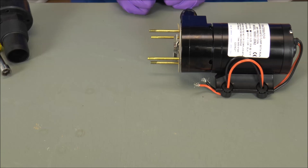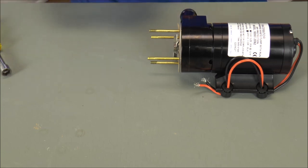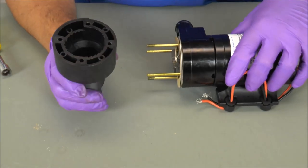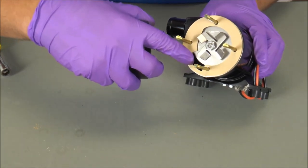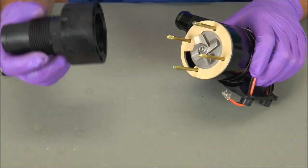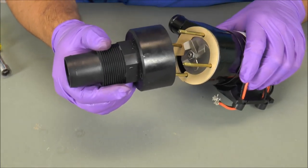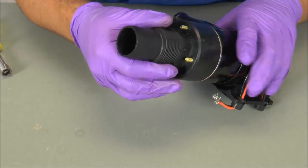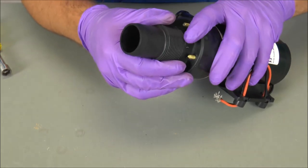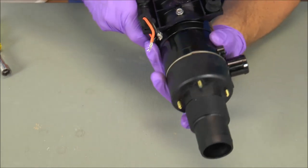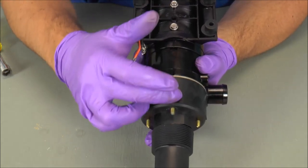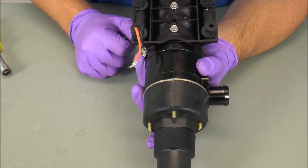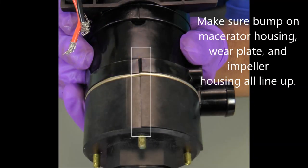So now we're going to reassemble the macerator housing. All you simply do is slide it on, however, you want to make sure that the cut out in the macerator housing lines up with the open portion of the macerator. So again, we simply slide on the macerator housing, making sure the cut out matches. Now if you're unsure, one way to confirm this is flipping it upside down, and you'll see that there's a little bump on both the macerator housing and the macerator. These two will line up.